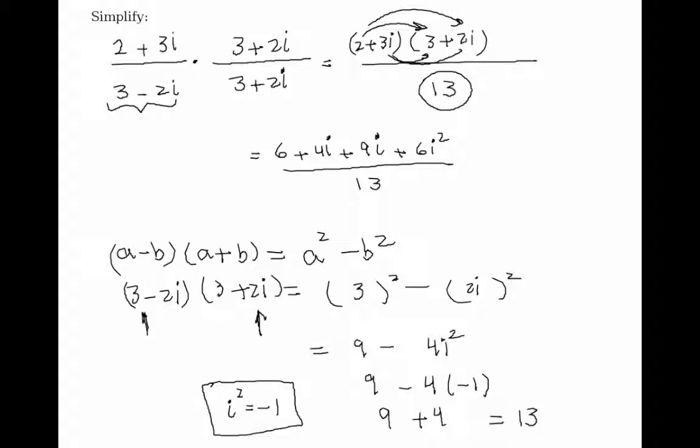Everywhere I see i squared, I replace it with minus 1. So here I get plus 6, and then this turns to minus 6, which adds up to 0. Plus 6 and minus 6 add up to 0. These two would give me a total of 13i at the top of the fraction.